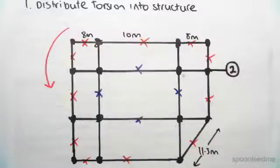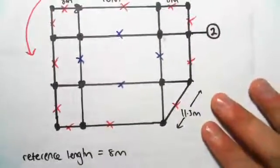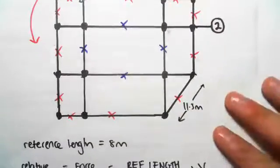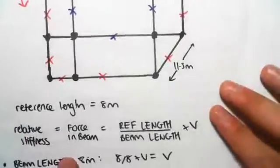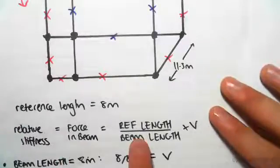Just like the shear, how we distributed into the structure, we need to look at the relative stiffness of the beams. The force in the beam is going to equal the reference length over the beam length times V, the shear.